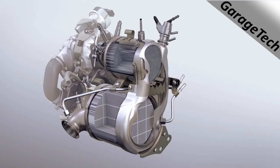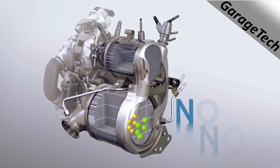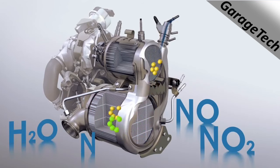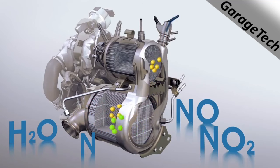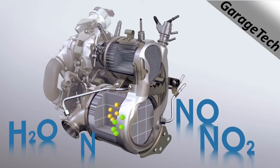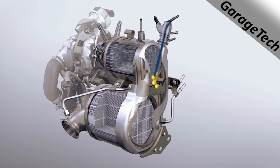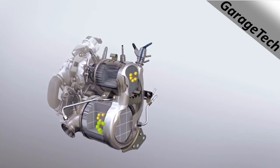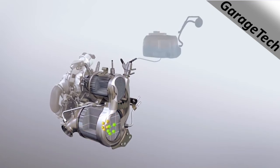It's mainly the nitrogen oxide NO and NO2 which are reduced — that's why this technology is called Selective Catalytic Reduction. Ammonia is needed for the chemical reaction. This is injected in the form of a solution of urea and water, referred to as AdBlue or DEF — Diesel Exhaust Fluid.